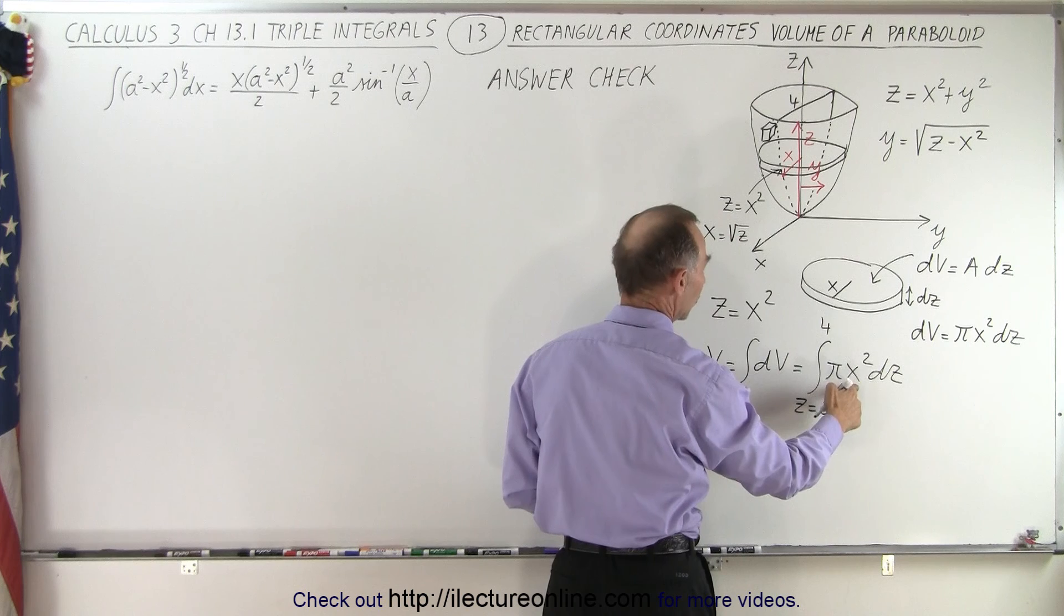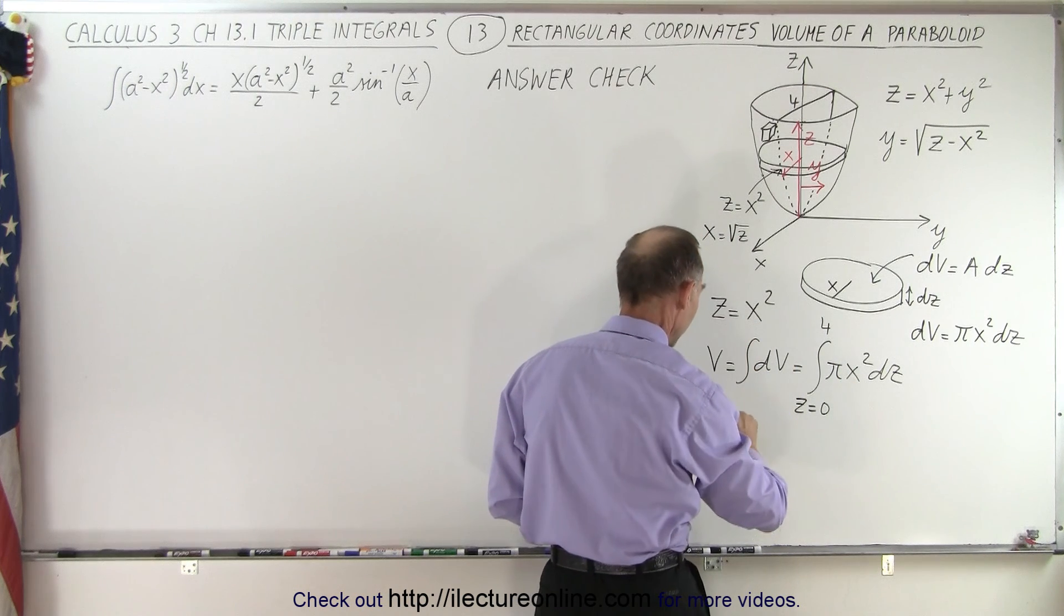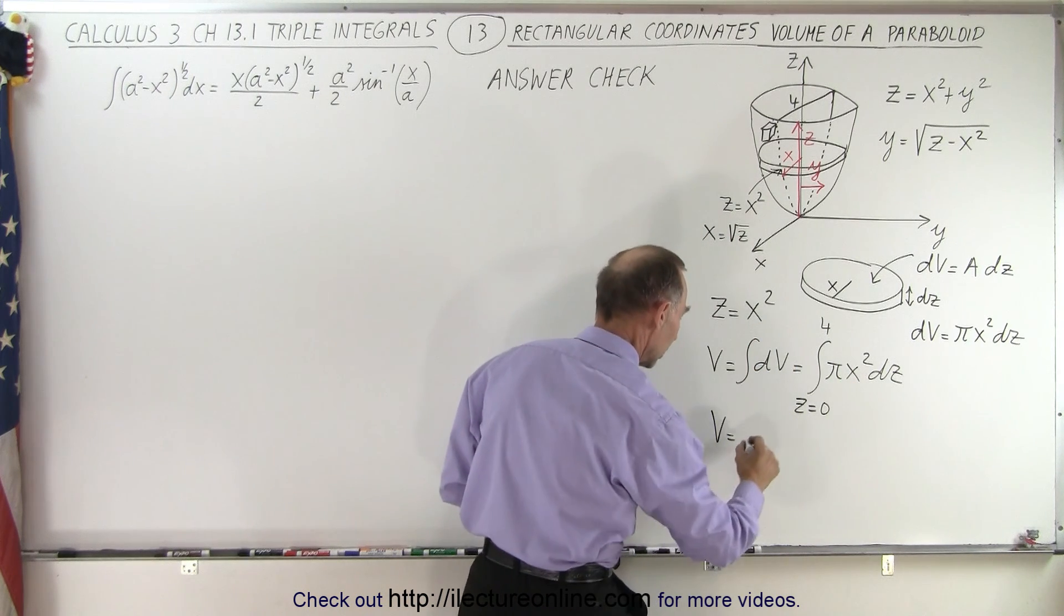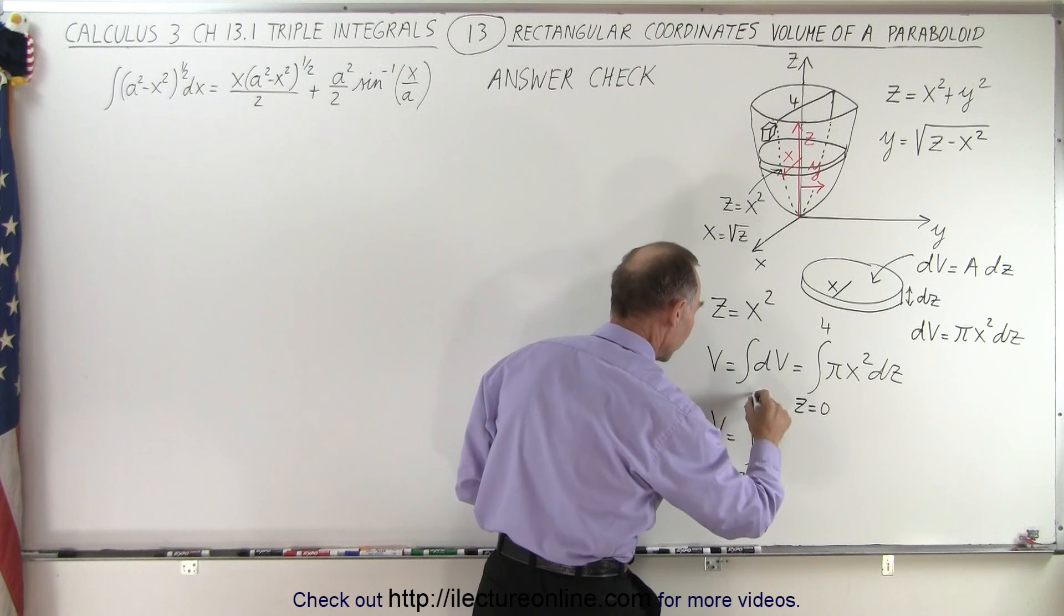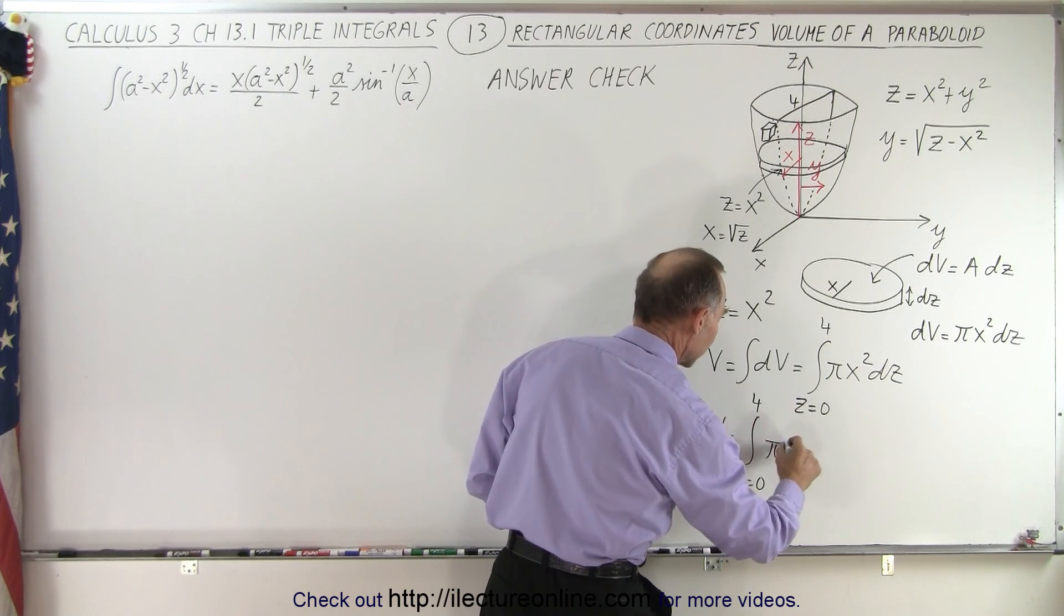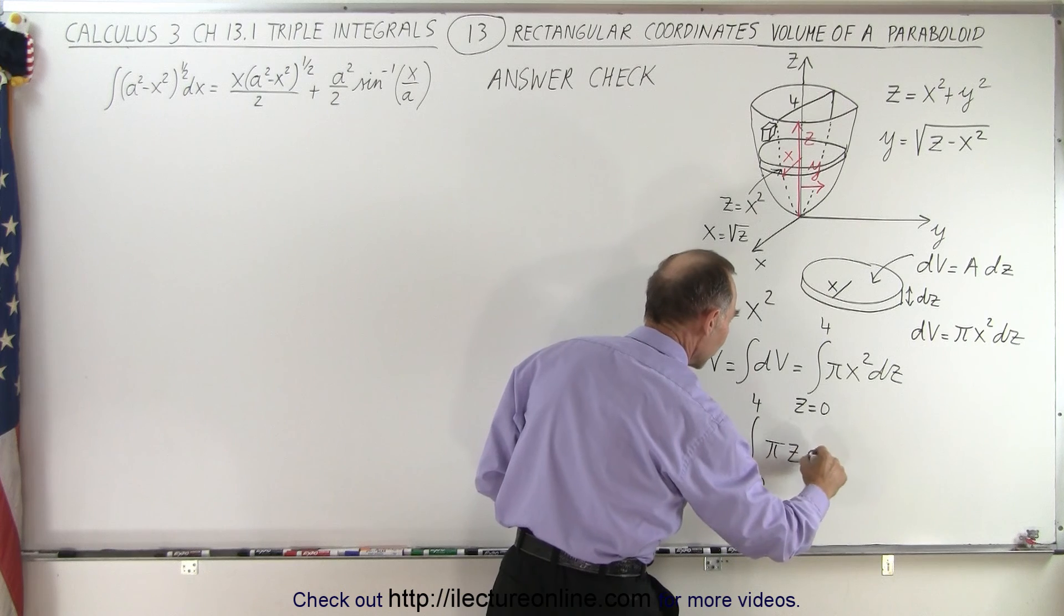We have to change x². Since x² becomes z, V equals the integral from z = 0 to 4 of πz dz.